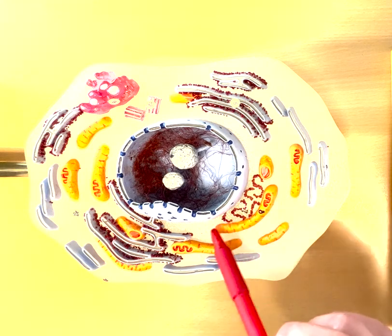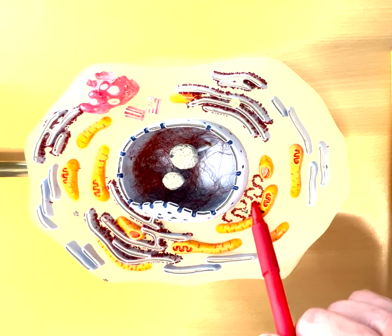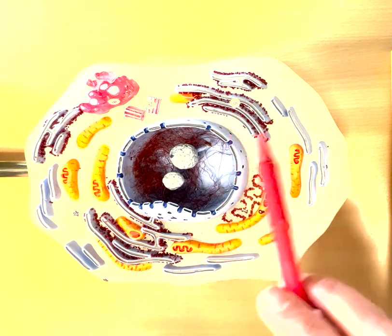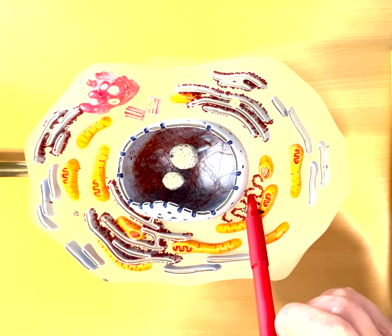These are free-floating ribosomes. So ribosomes can be attached. Ribosomes can be free-floating. They are super-duper important when we talk later about central dogma and how all the cells do all the things that they do with central dogma.